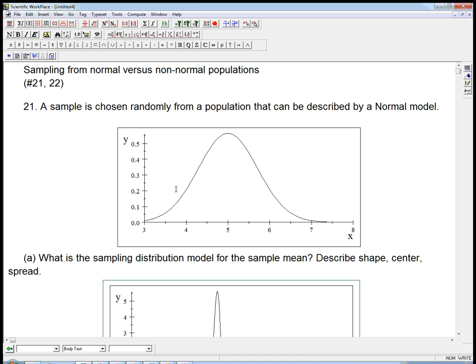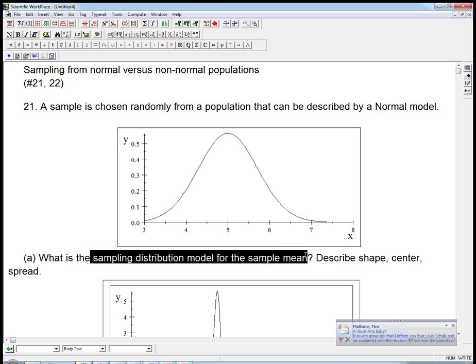So what's the sampling distribution model for the sample mean if we chose a sample? The main thing is there's a special case of the central limit theorem. The central limit theorem says that the sampling distribution model for the sample mean becomes more and more normal as the sample size increases. But the special case is if the population already was accurately modeled by a normal, then it's just plain normal to start with.